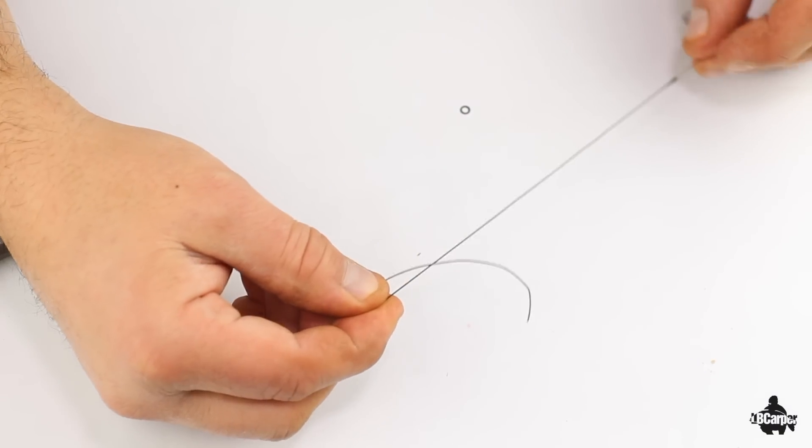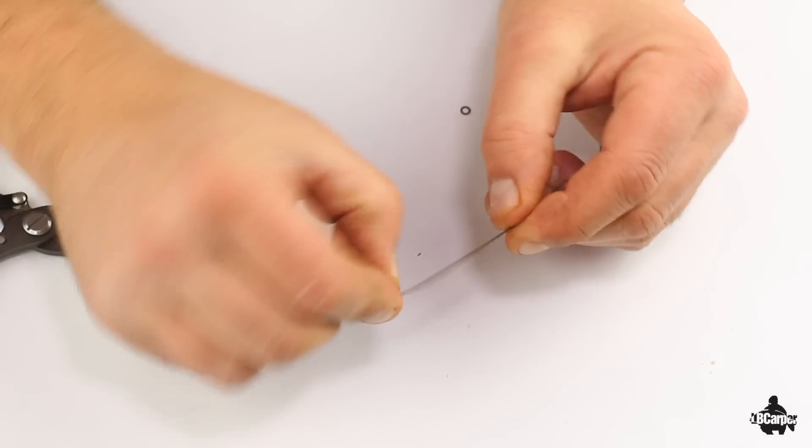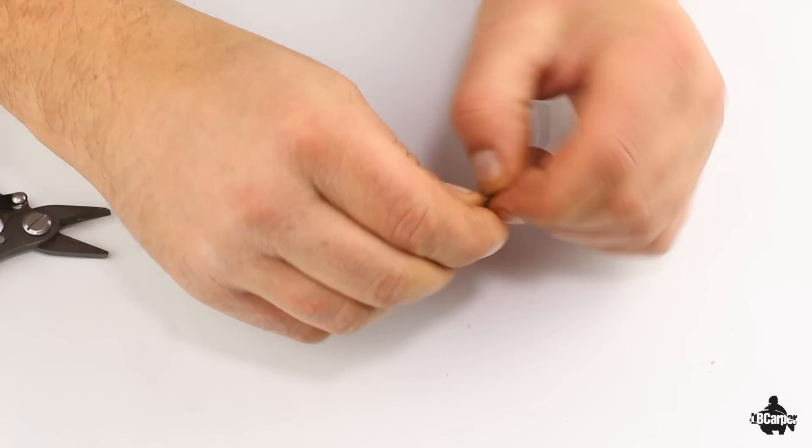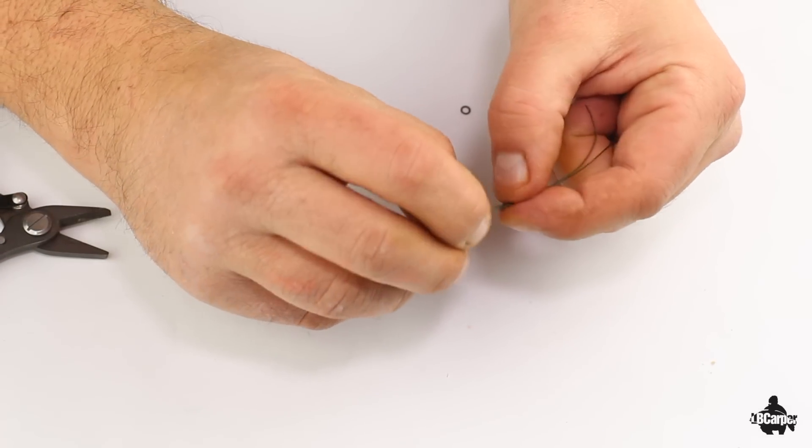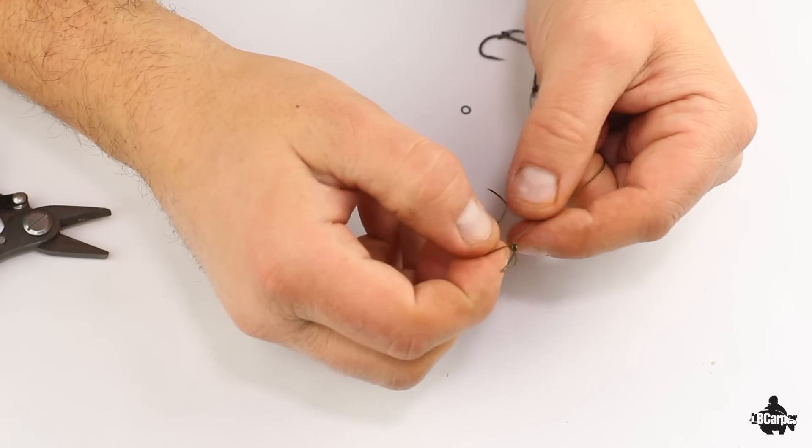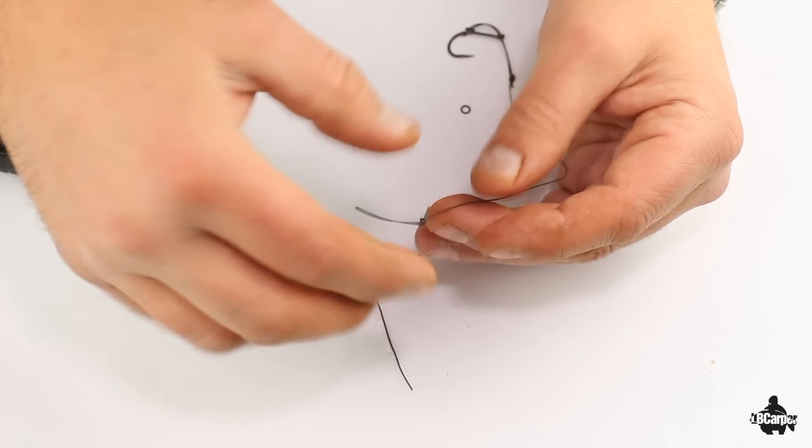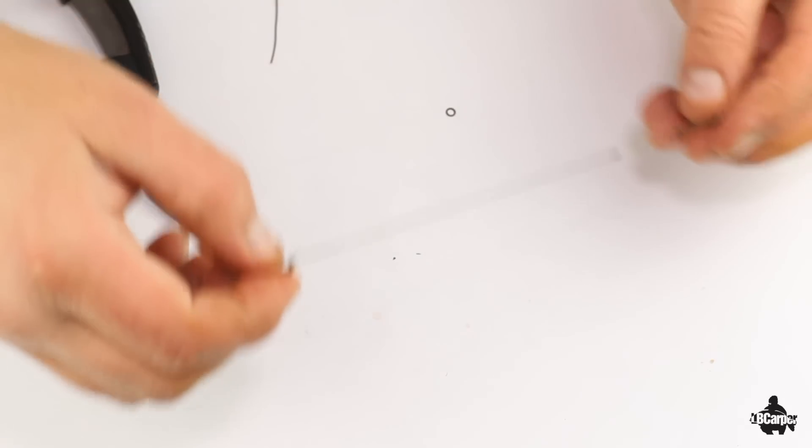Then tie another loop. Trim that down. There you go.